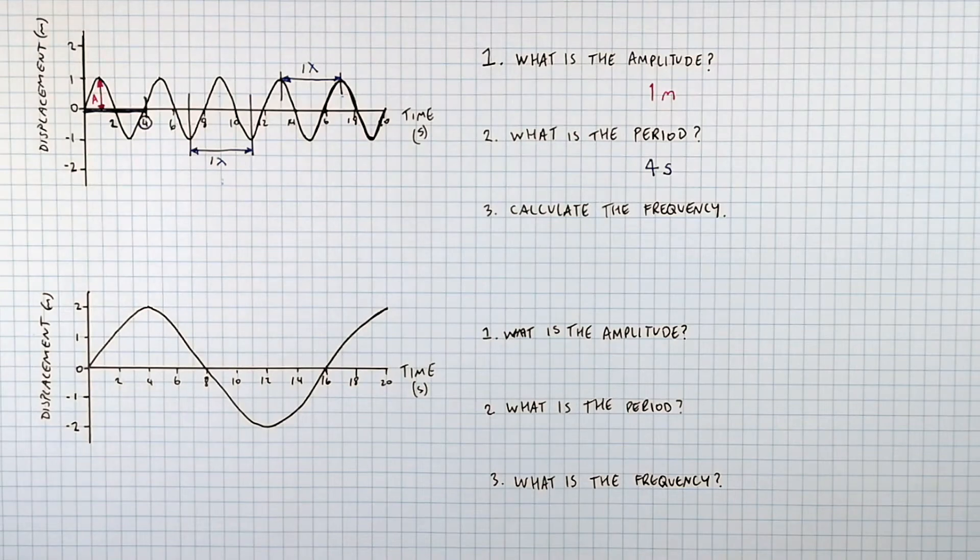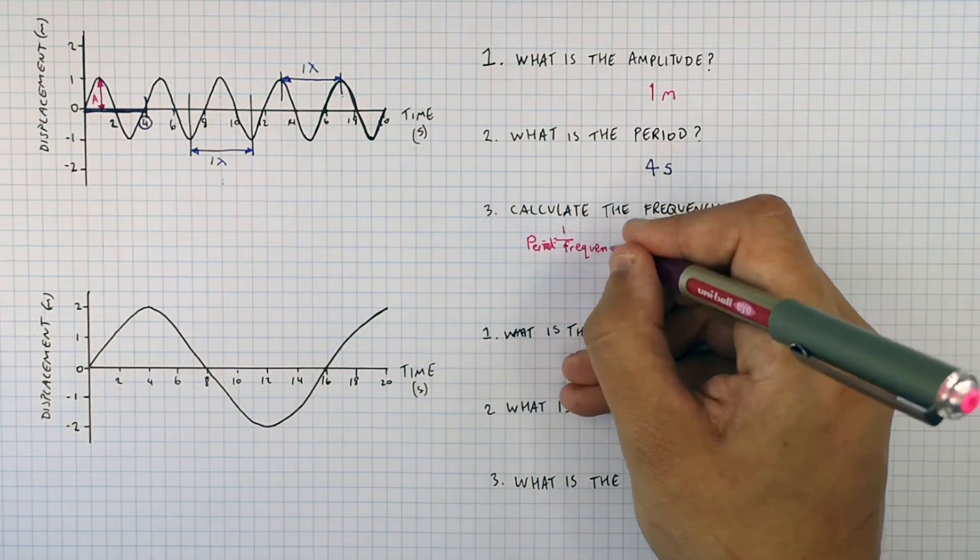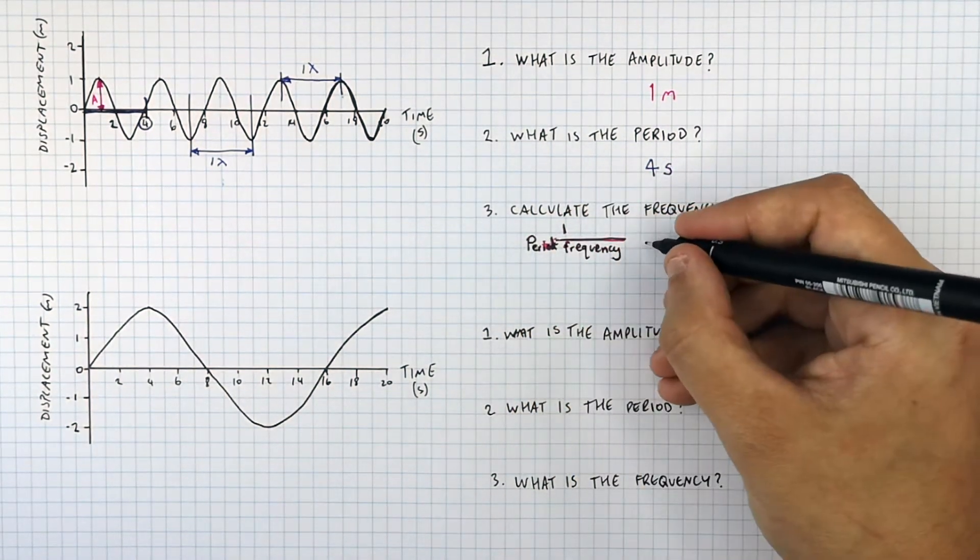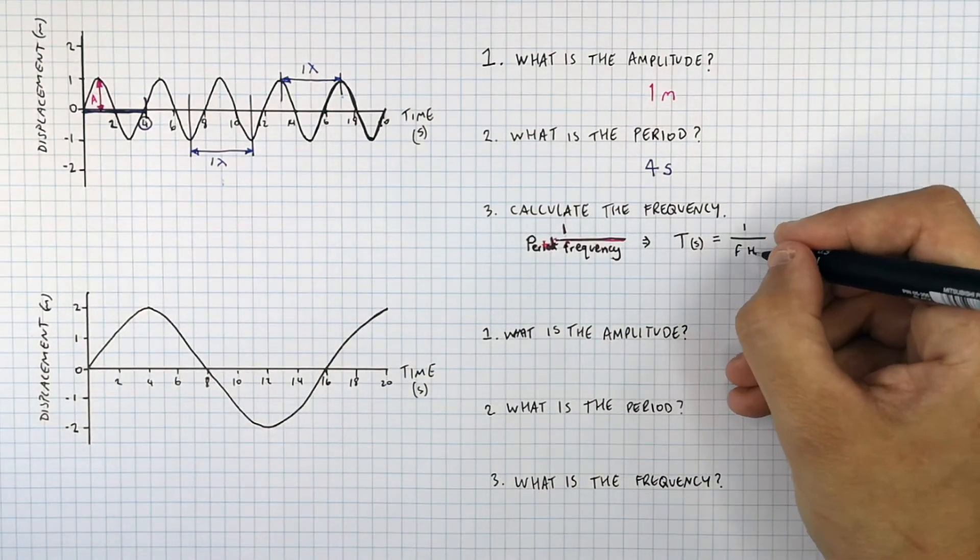So to calculate the frequency, recall the equation, period equals one over frequency. Period equals one over frequency, so T equals one over F.